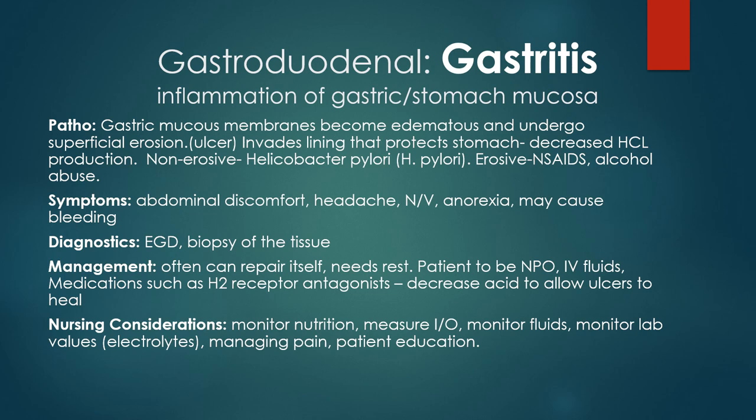Gastritis can also develop from acute illness, major traumatic injuries, burns, stress, severe infections, or major surgery. There is really a lack of perfusion to that lining of the stomach when these situations occur. Clinical manifestations for the client with acute gastritis include rapid onset of epigastric pain or discomfort.